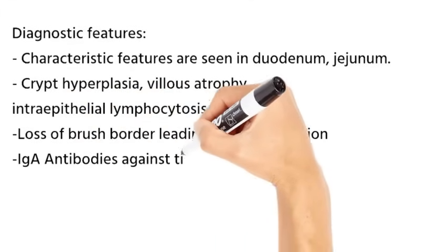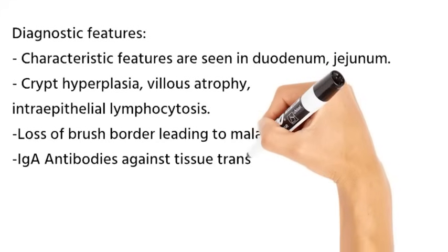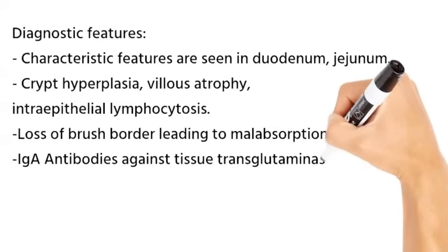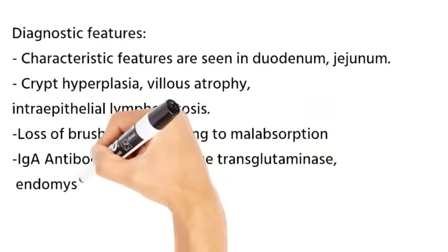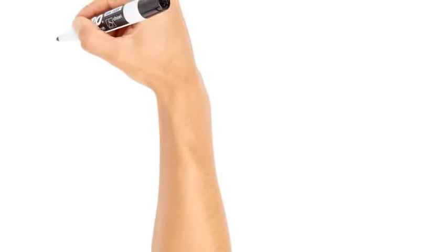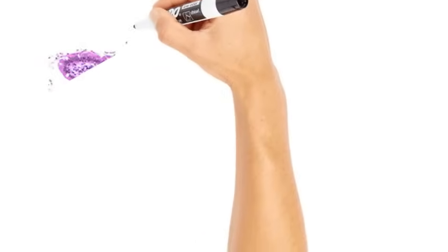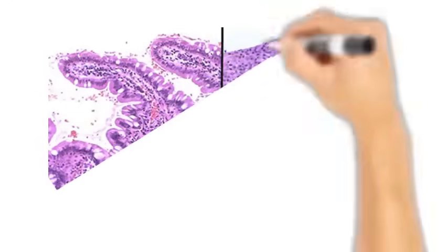Certain serological antibodies are characteristic, like IgA antibodies to tissue transglutaminase and also against endomysium.